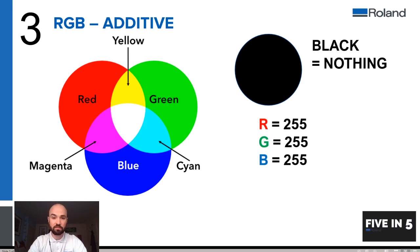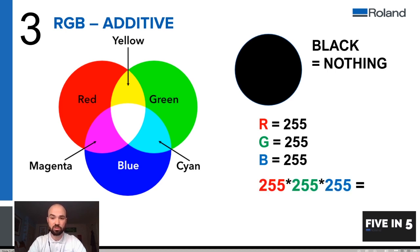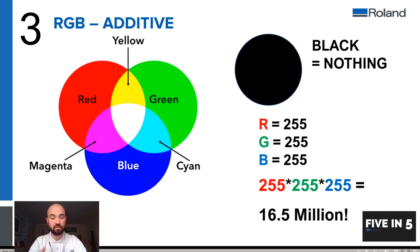The RGB channels, instead of going from 0 to 100, go from 0 to 255. These are referring to the wavelengths of these colors. So if we multiply 255 by 255 by 255, we have around 16.5 million colors. Again, this is device dependent, depending on the device that is going to be either reading or showing these colors. RGB is an additive color mode because we're adding light sources in varying wavelengths that combine to make colors.